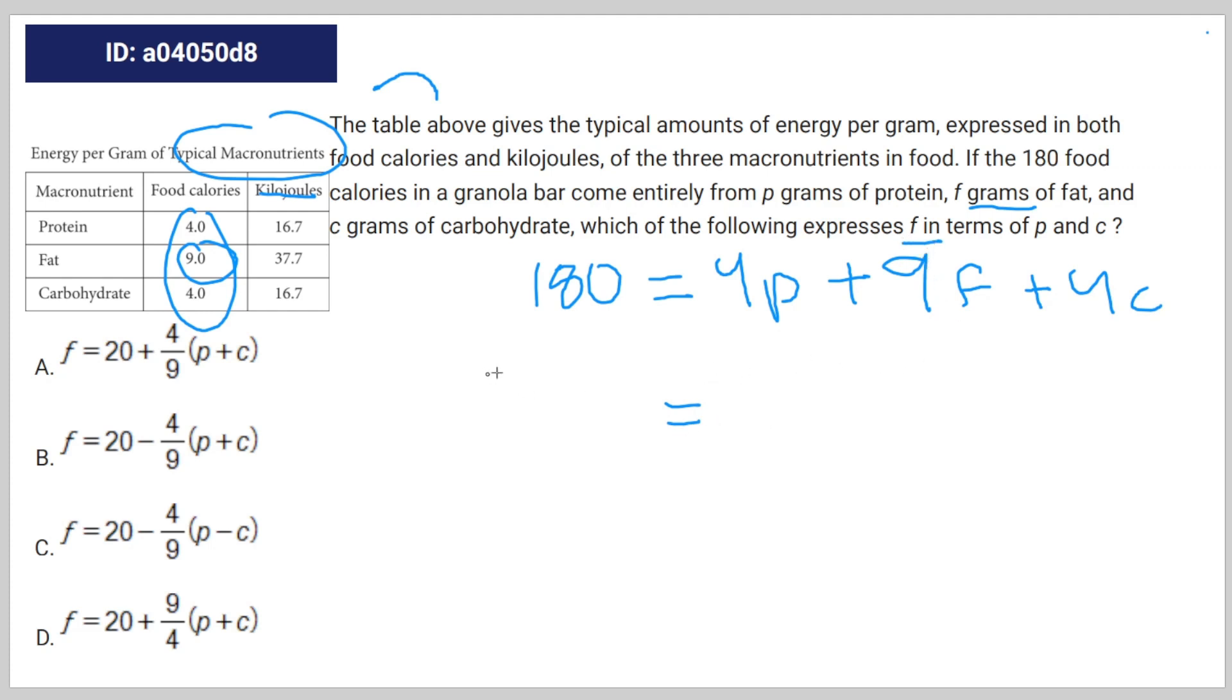So it's gonna be 180 minus 4p minus 4c is equal to 9f. You can write it like 180 minus 4 times (p plus c) is equal to 9f.